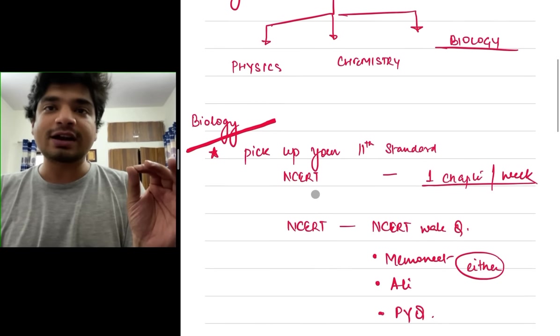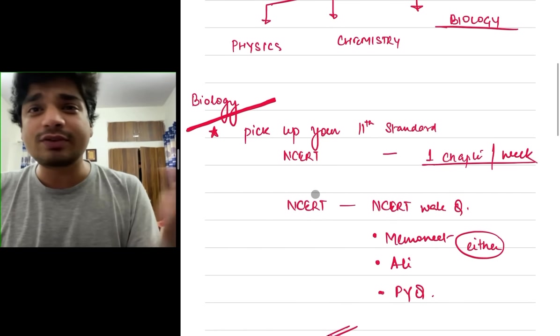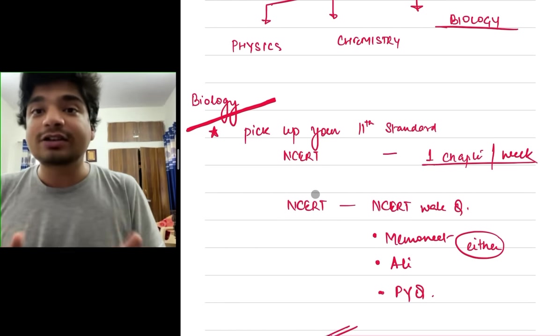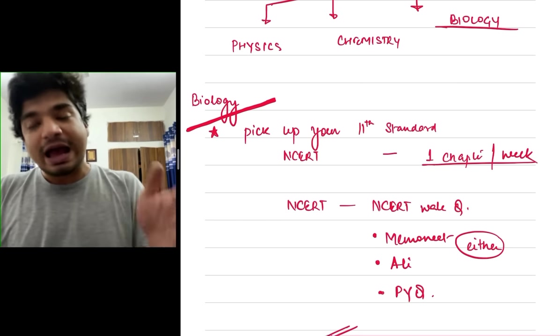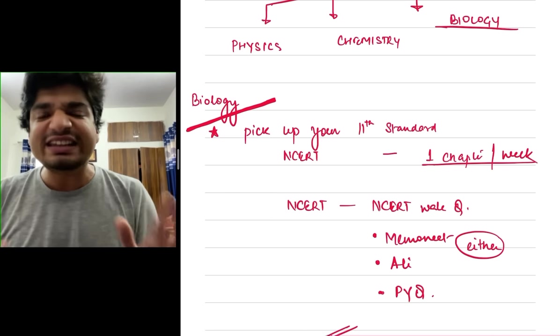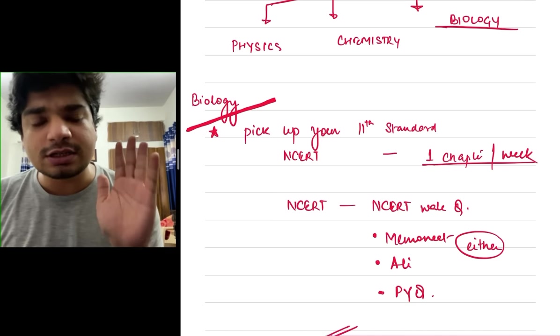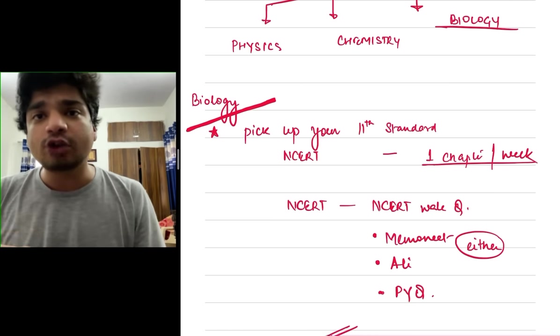So pick up your 11th standard NCERT, reading one chapter, 10, 15, 20 pages in one week that's all I'm asking you. Start by doing that. One chapter of NCERT's 11th standard start doing it and with MCQs solve. At least 400 to 500 MCQs per chapter you have to solve and you have to keep on solving them repeatedly.